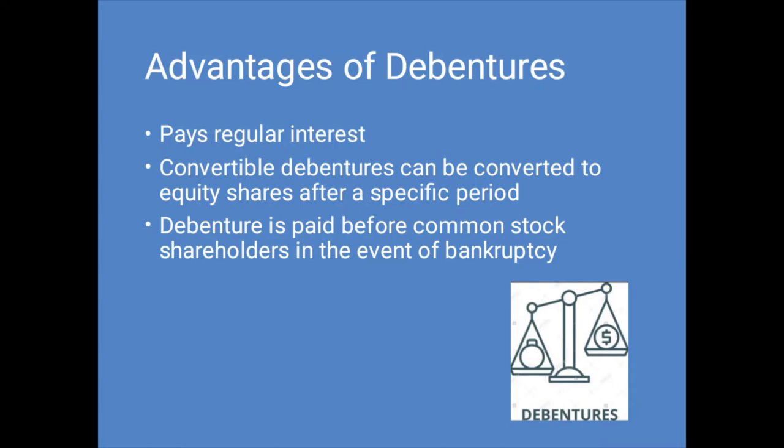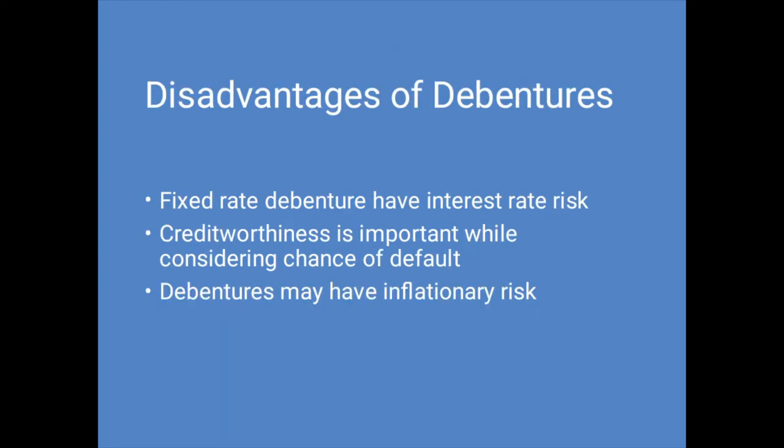Let us see a few advantages of debentures. A debenture pays a regular interest rate or coupon rate return to the investors. Convertible debentures can be converted to equity shares after a specific period, making them more appealing to the investors. In the event of a corporation's bankruptcy, the debenture is paid before the common stock shareholders. Now the disadvantages of debentures: fixed rate debentures may have interest rate exposure in an environment where the market rate is rising. Credit worthiness is important when considering the chance of default risk from the underlying issuer's financial viability.